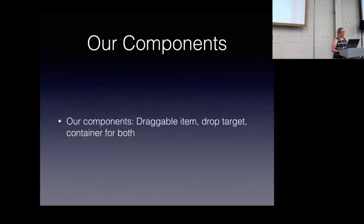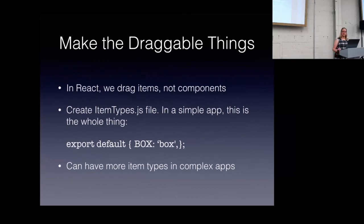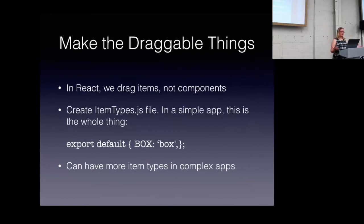Our three main components for this application are going to be a draggable item, a drop target, and a container to hold both of those things. In React, the thing we drag is not the component itself — it's an item. The item is a plain old JavaScript object describing what we're dragging. We start out by creating an item-types.js file. In our simple app, this one line of code is the whole thing: it's just a box described as 'box'. In a more complex app, you might want different item types so some targets accept certain items but not others.